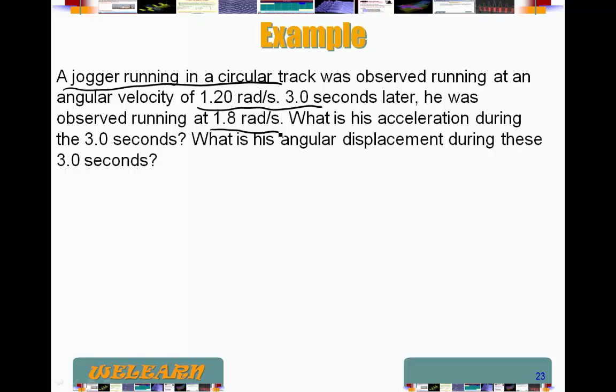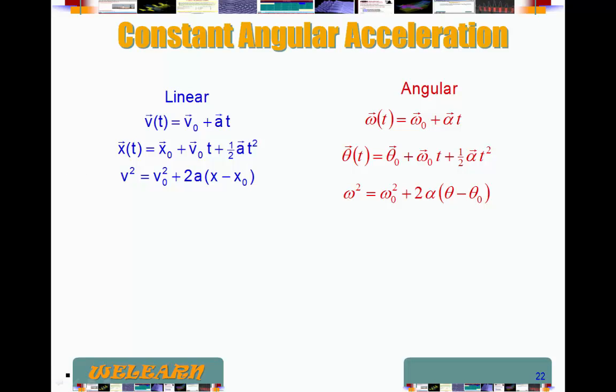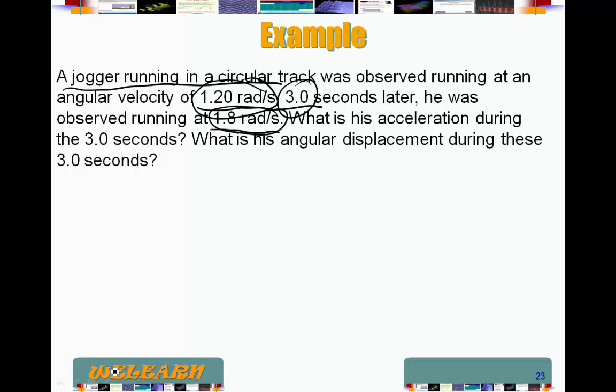What is his acceleration during the three seconds? Okay, so here it's a kinematics problem. We have an initial velocity, a final velocity, and a time. Here we go back, definition, or the equation for velocity. Omega is equal to omega naught, or omega zero, plus alpha t. So we write that down.